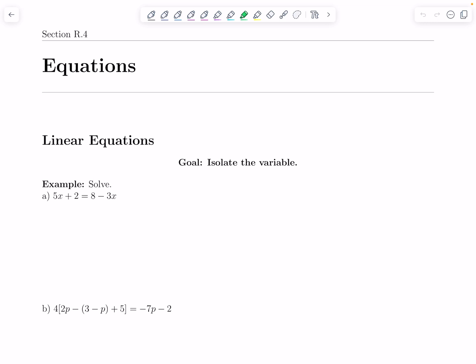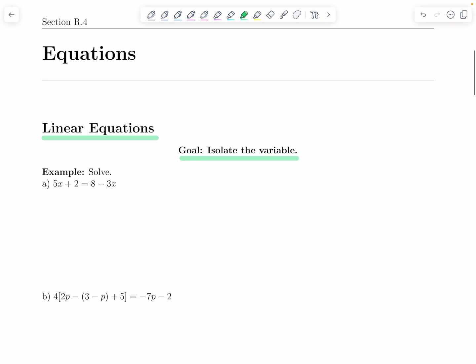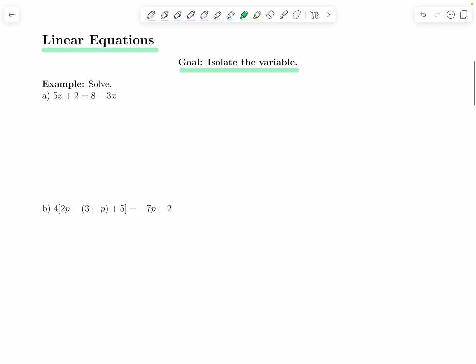The first kind of equation that we're going to go over solving are linear equations, meaning the exponent or the power on the variable is to the first and nothing else. Your goal is to isolate the variable, get it all by itself on one side of the equation. Here's the first example to get us warmed up: 5x plus 2 equals 8 minus 3x.